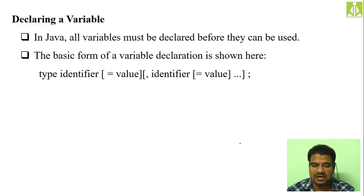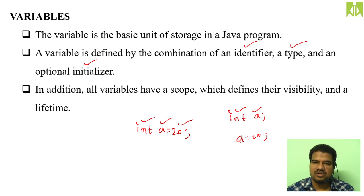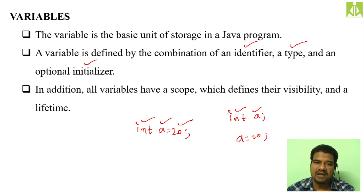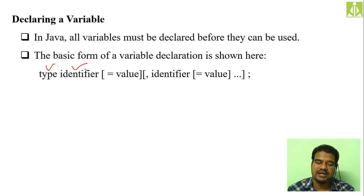Scope and visibility we will see afterwards — there is a separate concept for scope and visibility of a variable. In general, whenever you create a variable in your programming you have to focus on the identifier given to it, the type specified to it, and the value assigned to it. Apart from these three, we also have to focus on scope and visibility of that variable. Now, declaring a variable: you have to specify the type and the identifier.